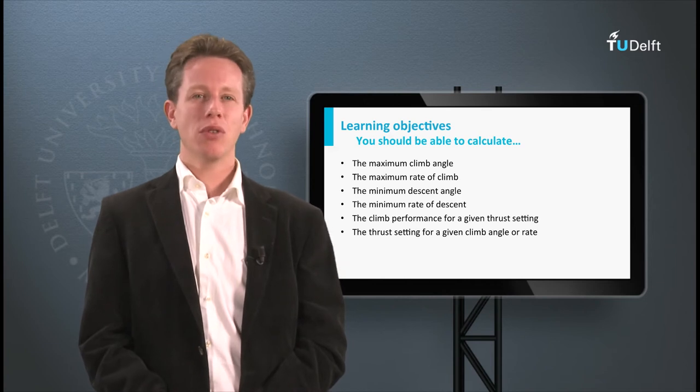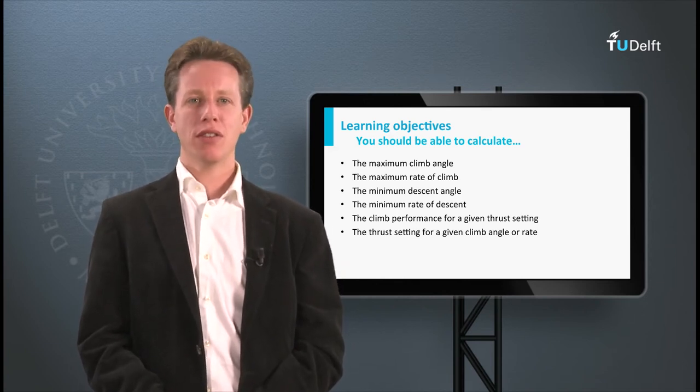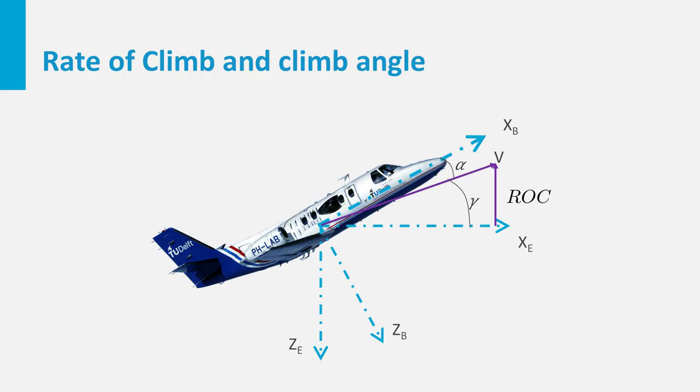Climb rate and climb angle can be visualized with the airspeed vector. The angle this vector makes with the horizon is the climb angle. The vertical component is in fact the climb rate. Remember that the condition for maximum climb angle is not the same as the condition for maximum climb rate.